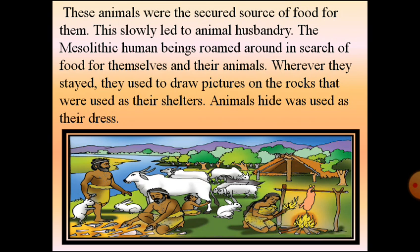The Mesolithic human beings roamed around in search of food for themselves and their animals. Wherever they stayed, they drew pictures on rocks that served as their shelters, as those provided shelter from rain, heat, and wind. Animal hides were used as their dress. This is evidenced in old sites with caves and rock shelters.